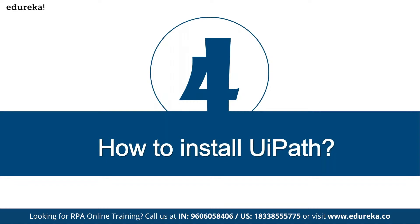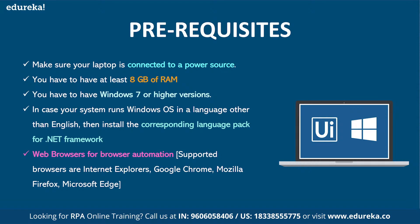Before installing, you need to know the prerequisites. You should have at least 8 GB of RAM — 4 GB also works but you may have performance issues. You need Windows 7 or higher, the .NET framework installed, and supported browsers like Microsoft Edge, Internet Explorer, Google Chrome, and Firefox. To install, go to cloud.uipath.com, sign up with your email account — you can continue with Google. Once signed up, you'll land on the UiPath Automation Cloud home page.